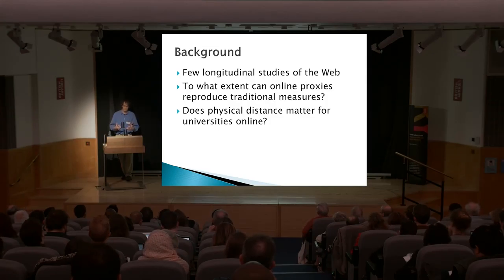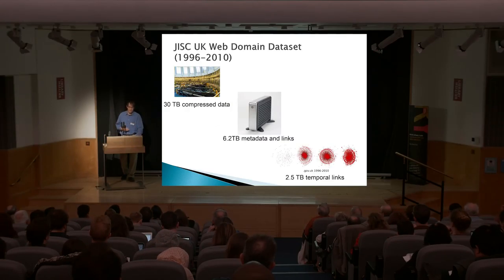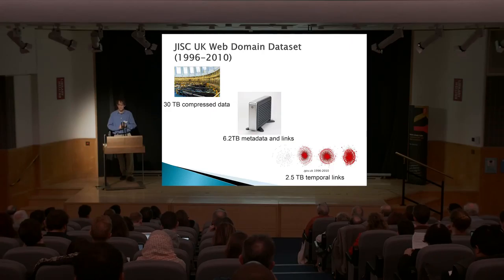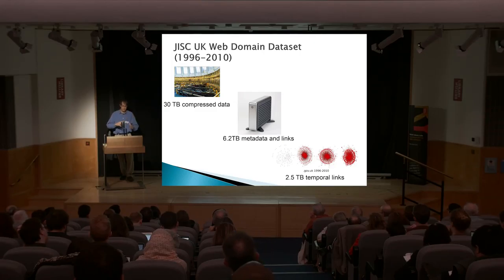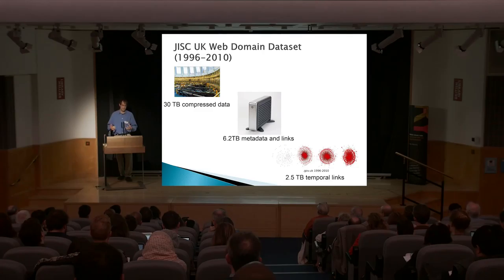Working with social science colleagues, we wanted to understand the extent to which some of the online data was either reproducing or conflicting with some of the traditional measures offline. We started with the UK web domain dataset, housed here at the British Library, originally acquired by the Internet Archive and their partner organisations, and focused on the temporal hyperlinks between sites. Unlike Jane's team digging into the actual text, we were more interested in the emergent structure of how all the pages in this archive are linked together.